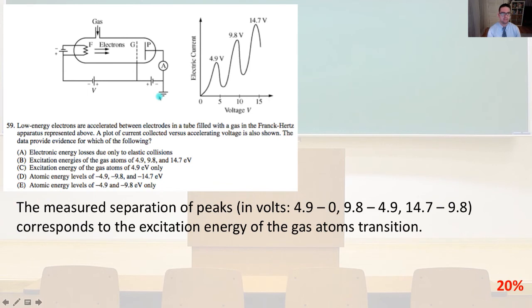Number 59, low energy electrons are accelerated between electrodes in a tube filled with the gas in the Franck-Hertz apparatus represented above. A plot of current collected versus accelerating voltage is also shown. The data provide evidence for which of the following. So from here, we can see the graph above. The measured separation of the peaks,